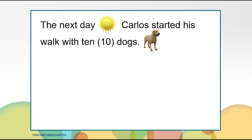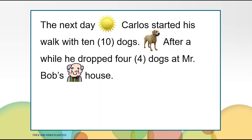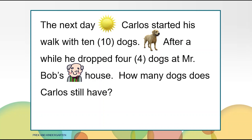Picture in your mind what is happening while I read the story to you. The next day Carlos started his walk with ten dogs. What do we know so far? The next day Carlos started his walk with ten dogs. After a while he dropped four dogs at Mr. Bob's house. How many dogs does Carlos still have?